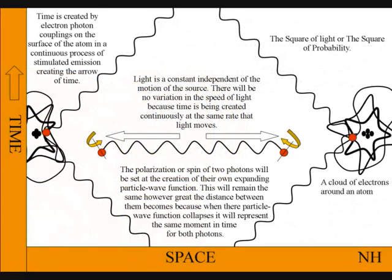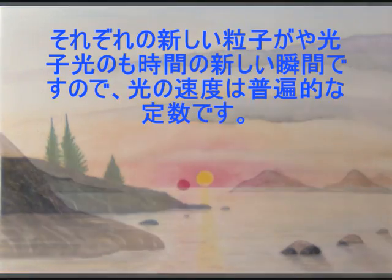It is because this process is at the same rate that light moves that the speed of light between the atoms will always be a universal constant, independent of the motion of the source.